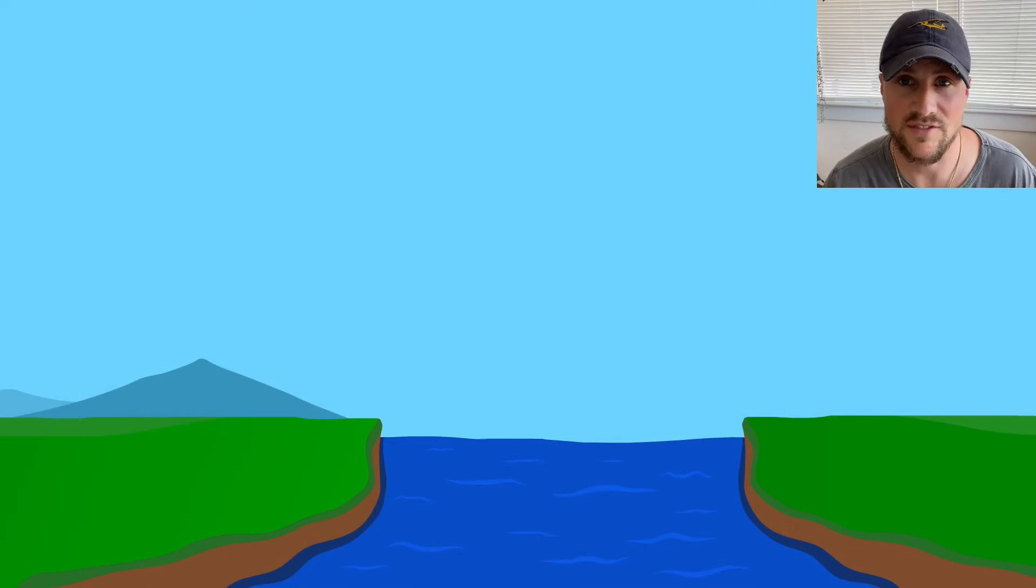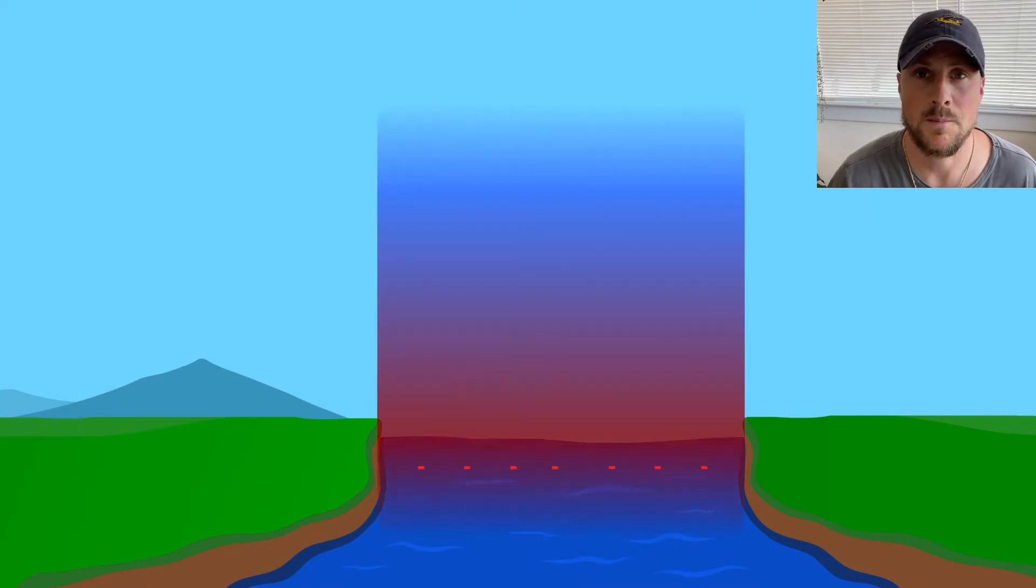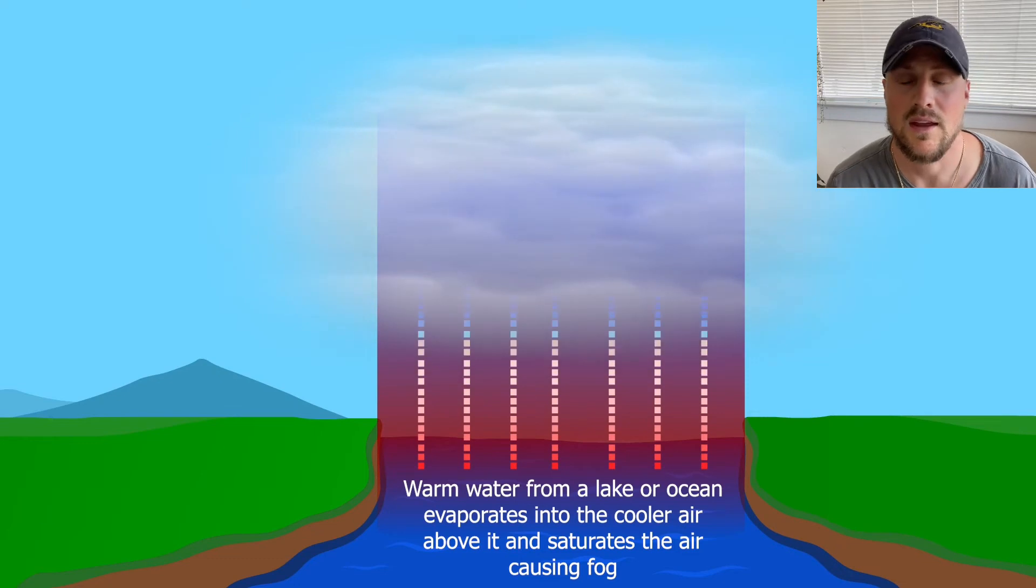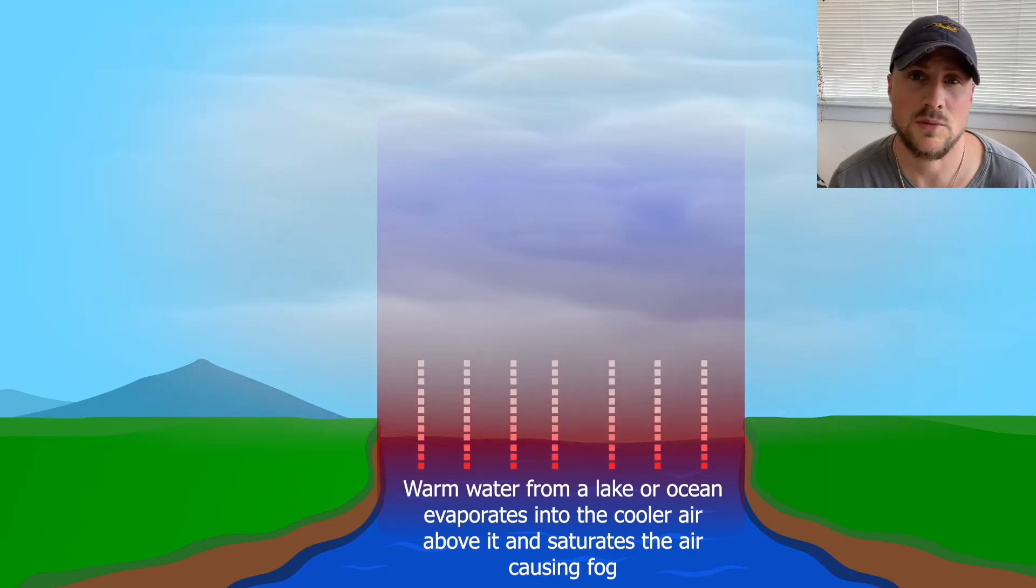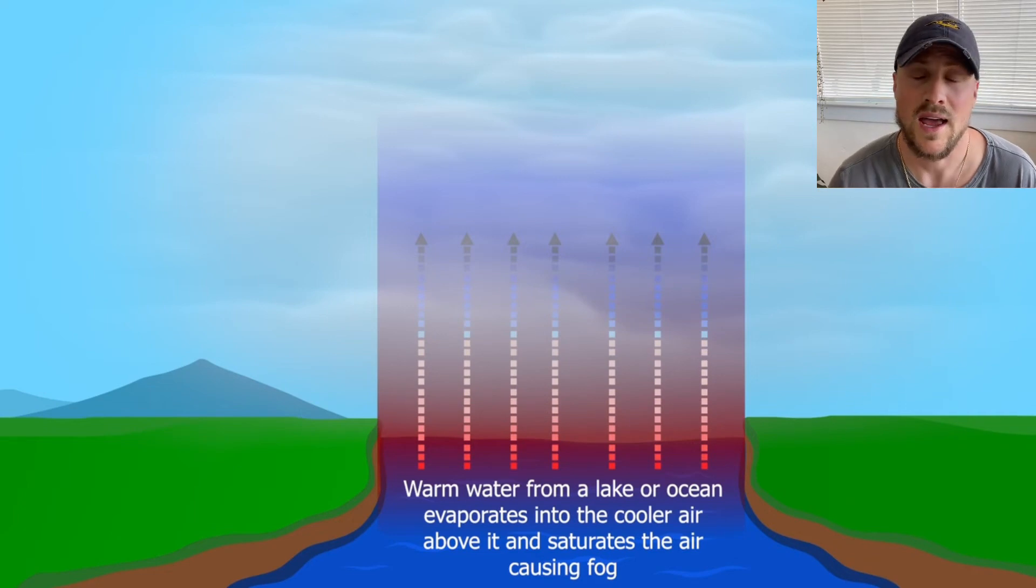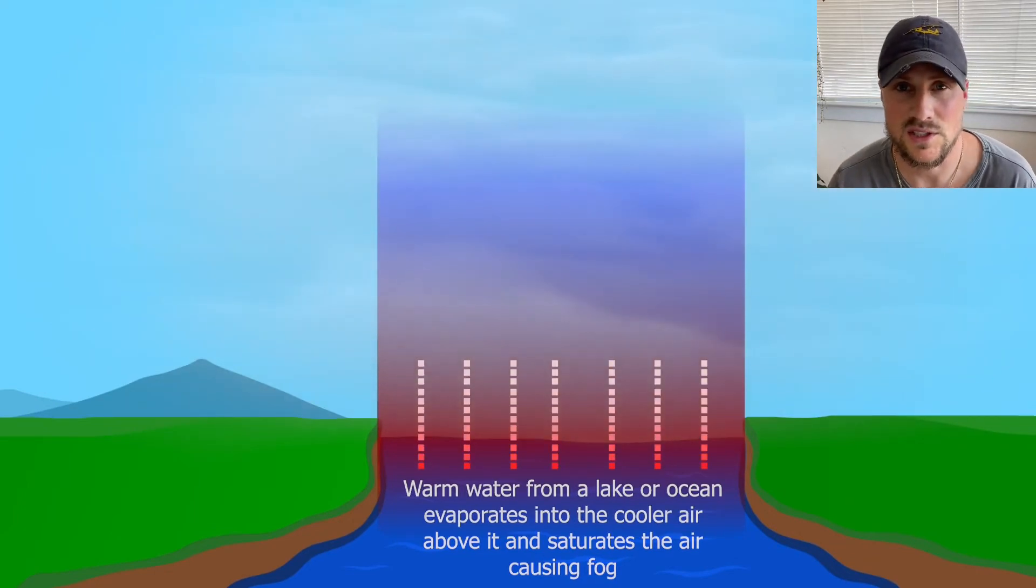Steam fog occurs when warm water from a lake or ocean evaporates into the cold air above it. When enough water evaporates, it saturates the air above it and fog is formed. Pilots should be aware of rising air and thus turbulence in these areas and, like all fogs, possible icing and freezing conditions.